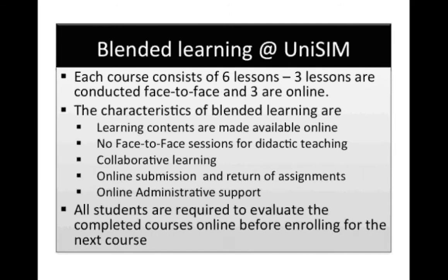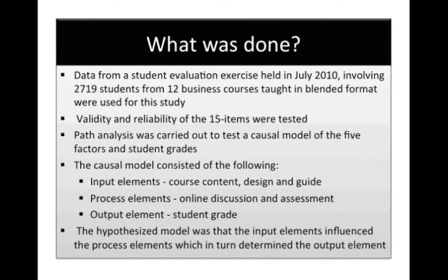Data for this study was obtained from a student evaluation exercise held in July 2010 involving 2,719 students from 12 business courses taught in blended format. Validity and reliability of the 15 items were tested, and then path analysis was carried out to test a causal model of the five factors on student grades. The causal model consisted of input elements, process elements, and output elements. Input elements — course content, design, and handbook — initiate learning. Process elements — online discussion and assessment — represent what happens during the learning cycle. The output element is the student grade. The hypothesized model was that input elements influence process elements, which in turn determine the output elements.